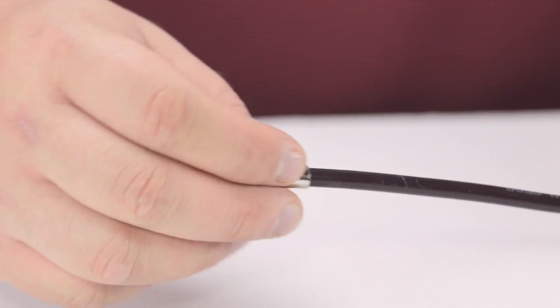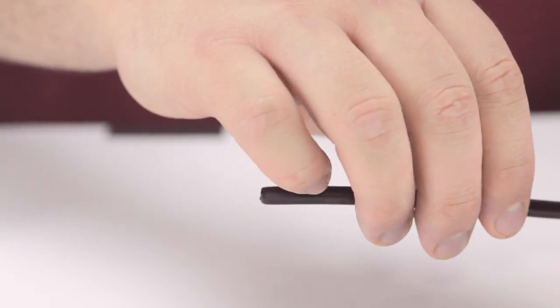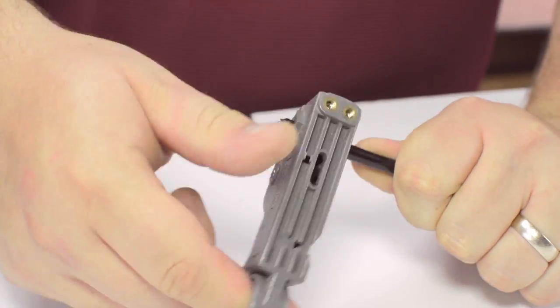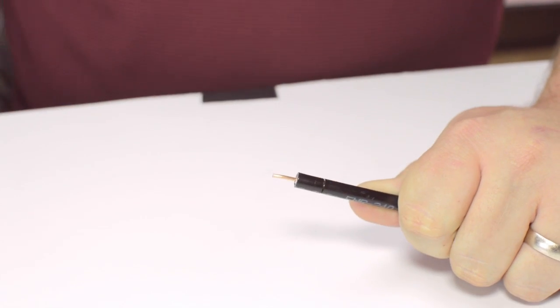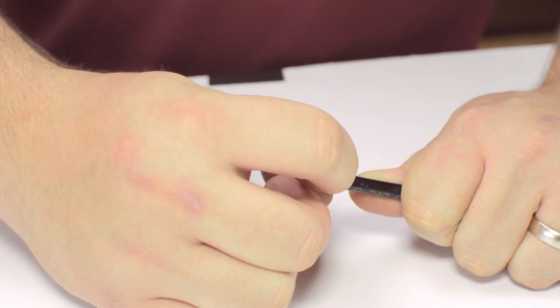Start by inserting the ferrule over the outer jacket of the cable. Then, using your cable stripper, strip back the outer jacket and dielectric. The advantage of using a cable stripper is that it will strip back the jacket and dielectric at the same time.